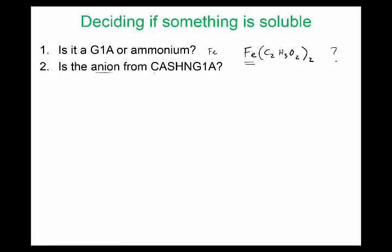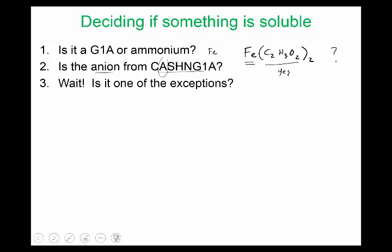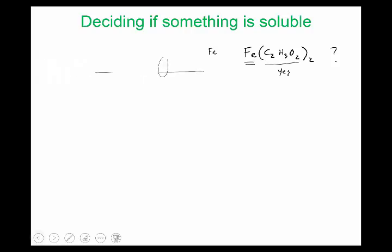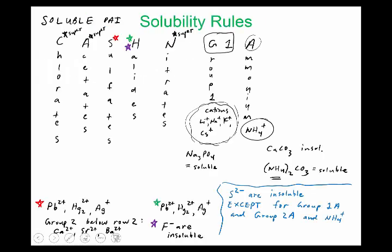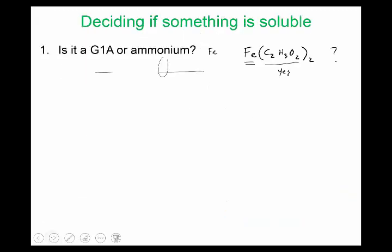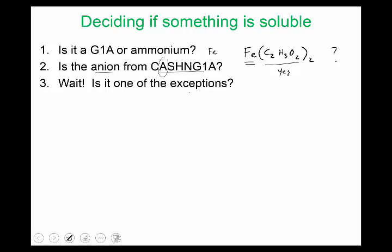Is the anion from CASHNGLA? The answer is yes, it's acetate. The next question is, is it one of the exceptions? Did acetates have any exceptions? If we go back to our slide here, acetates had no exceptions, so the answer is no it's not one of the exceptions. So this is soluble.